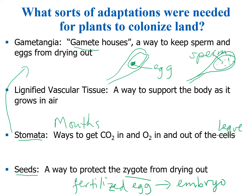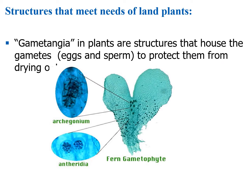This mini slideshow is going to cover all of these adaptations. Let's start with gametangia — structures that protect the eggs and sperm from drying out. This is a fern gametophyte, meaning it produces the gametes. It produces the eggs in a place called the archegonium and it produces the sperm in a place called the antheridium.